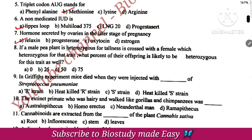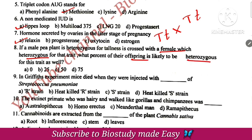A male pea plant heterozygous for tallness is crossed with a female that is also heterozygous. So both parents are heterozygous for tallness, and the offspring will show heterozygous traits from this cross.